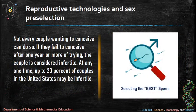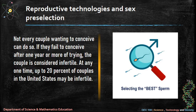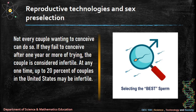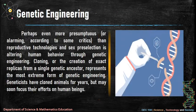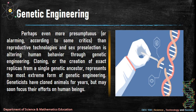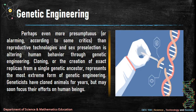Reproductive technologies and sex pre-selection: not every couple wanting to conceive can do so. If they fail to conceive after one year or more of trying, the couple is considered infertile — up to 20% of couples in the United States may be infertile at any one time. Genetic engineering — perhaps even more alarming according to some critics — involves altering human behavior through genetic engineering. Cloning, the creation of exact replicas from a single genetic ancestor, represents the most extreme form. Geneticists have cloned animals for years but may soon focus their efforts on human beings.